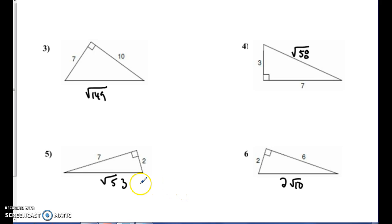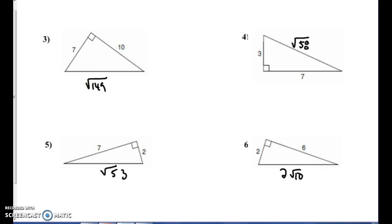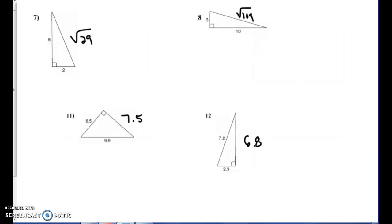Number five, I got square root of 53. Number six, I got two square root of 10. Number seven, I got square root of 29. Number eight, I got square root of 109.